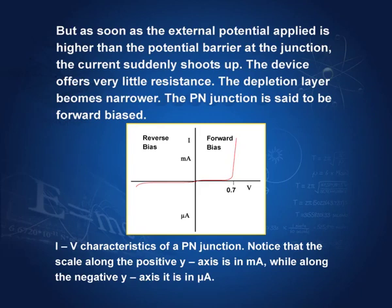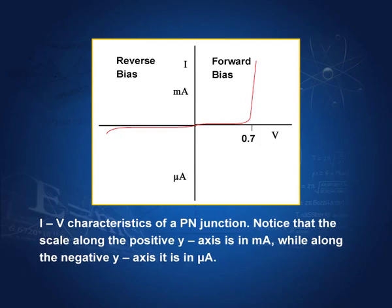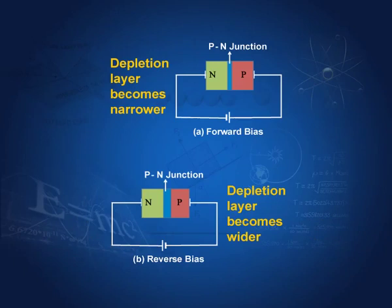This is the diode junction characteristics. You can see that up to 0.7 volts in silicon there is no significant current, but as soon as the external potential exceeds the potential barrier of 0.6 volts, the current suddenly shoots up. In reverse bias, there is a very small reverse current — in the microampere range — compared to the milliampere range in forward bias. In forward bias, the depletion layer becomes narrower and the device offers very little resistance, so electrons can move from n to p in large numbers. In reverse bias, very few electrons can move and the reverse current is very small.